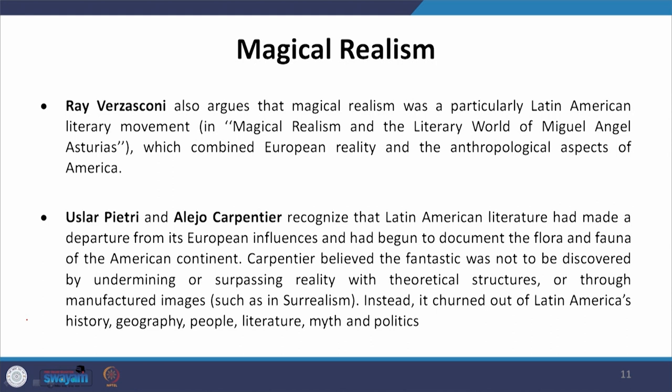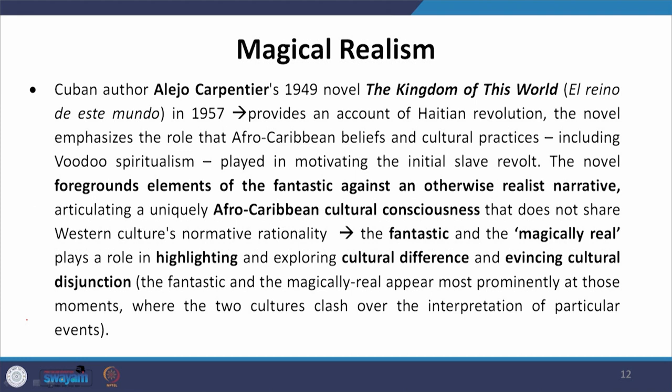Similarly, Uslar Pietri and Alejo Carpentier recognized that Latin American literature had made a departure from its European influences and had begun to document the flora and fauna of the American continent. Carpentier believes that the fantastic was not to be discovered by undermining or surpassing reality with theoretical structures or through manufactured images that do not belong to Latin America originally — such as in surrealism. Instead, the magical churns out of the Latin American history, geography, people, habits, literature, myth, and politics.